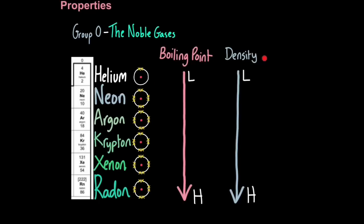The boiling point and density, boiling point in degrees Celsius and density in grams per centimetre cubed, increases as you go down the group. So helium has the lowest boiling point and density and radon has the highest.